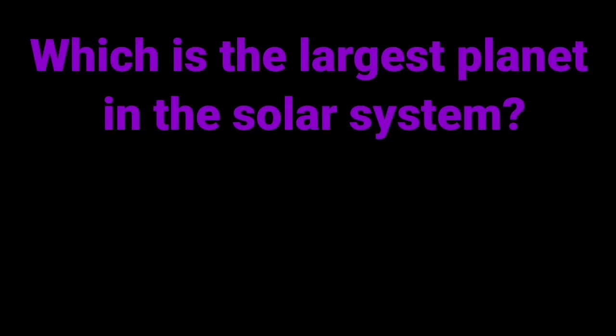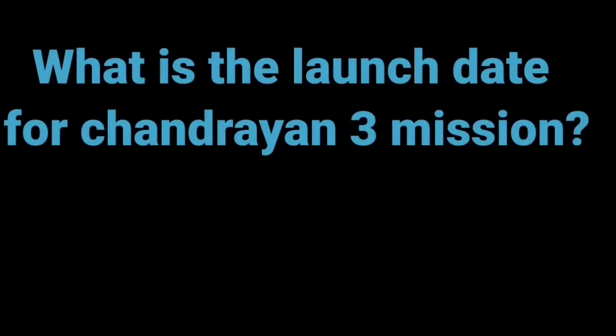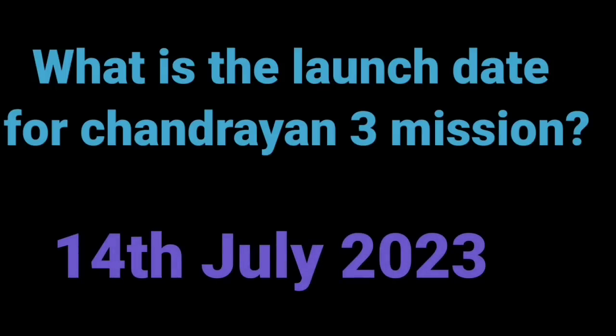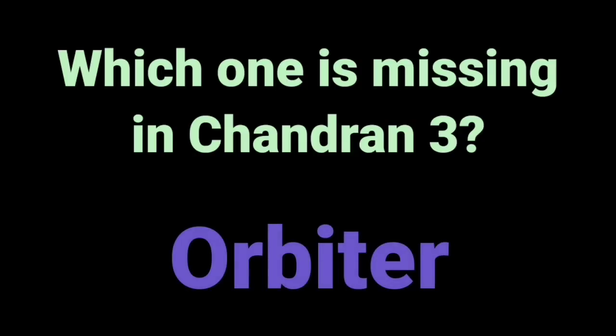Which is the largest planet in the solar system? Jupiter, 139,820 km. What is the launch date for Chandrayaan 3 mission? 14th July 2023. Which component is missing in Chandrayaan 3? The orbiter.